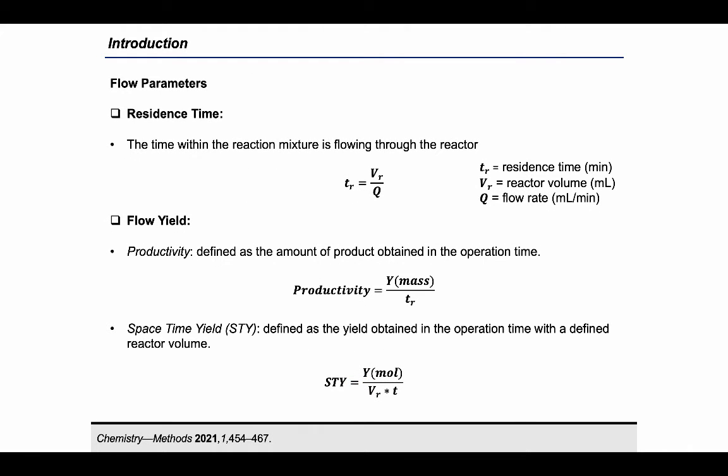When a flow reaction is considered, there are two important parameters that must be redefined: the reaction time and the yield. The reaction time is now defined as the amount of time in which the flow stream enters and exits the reactor.